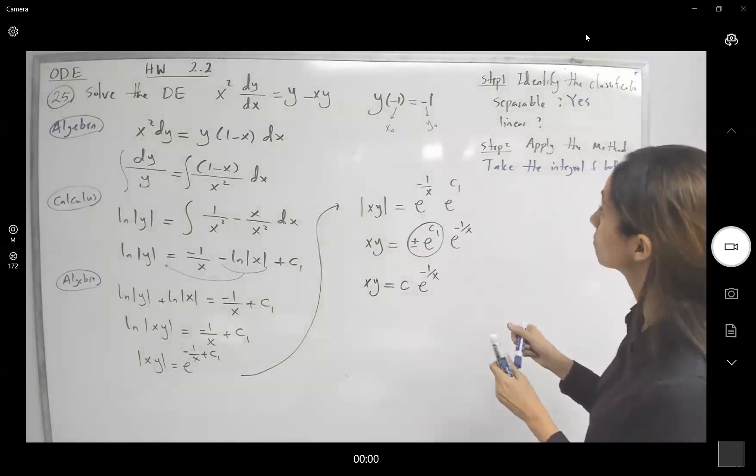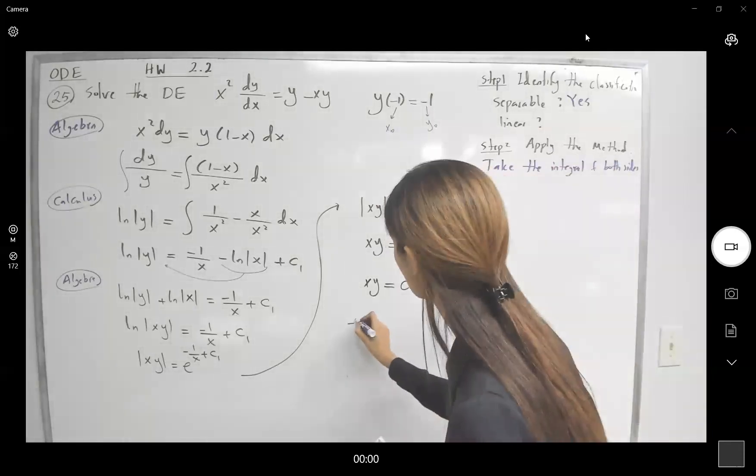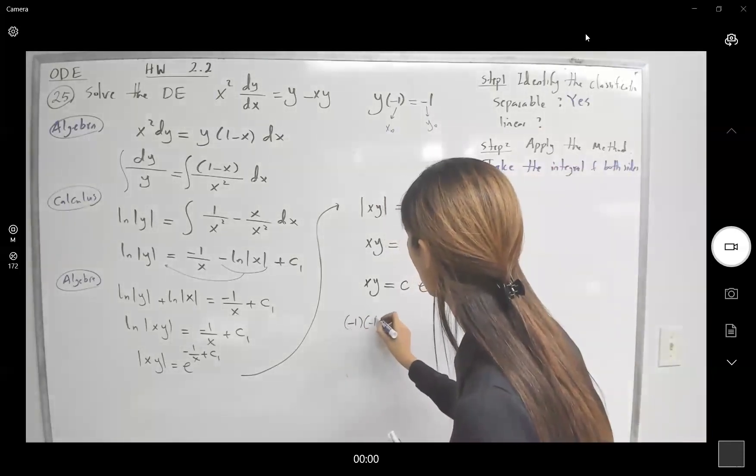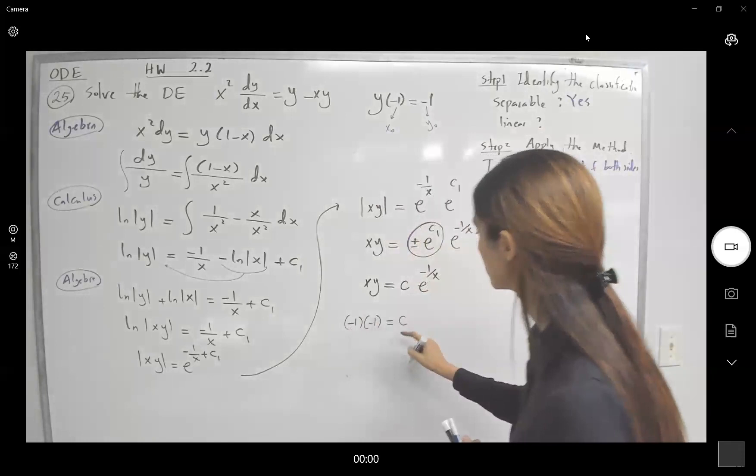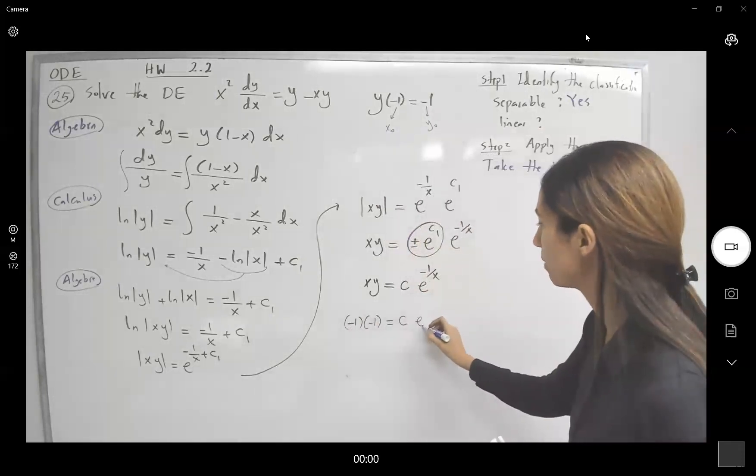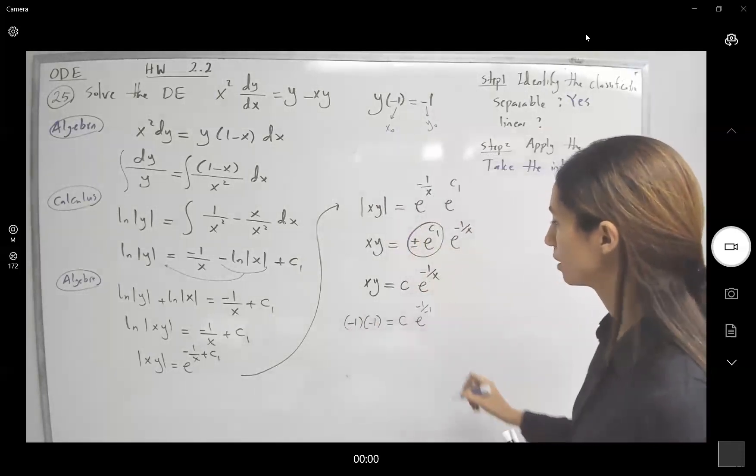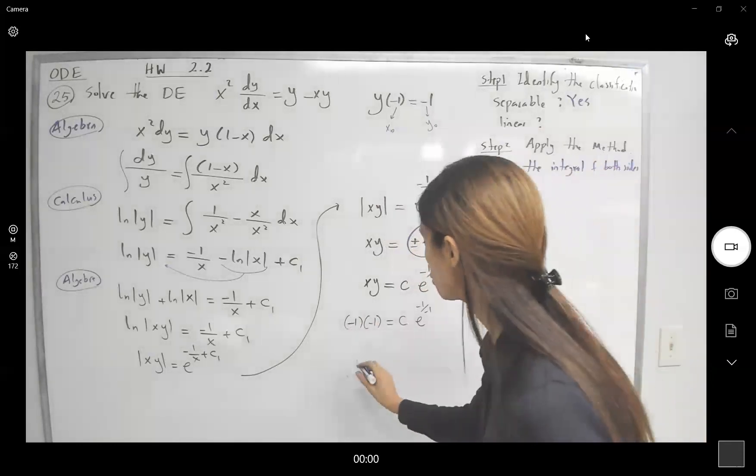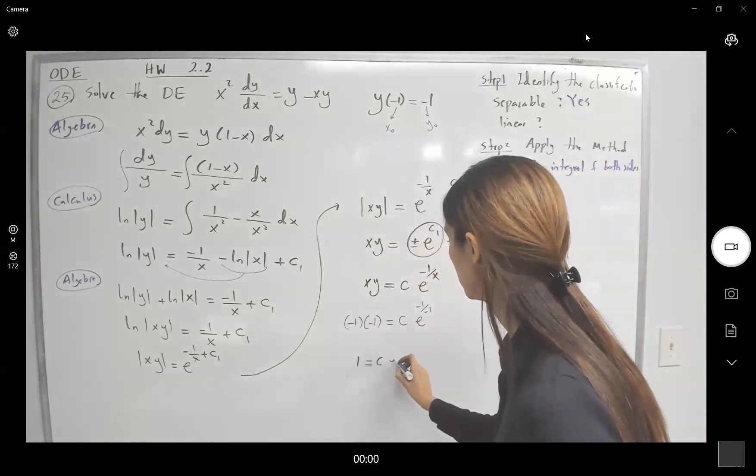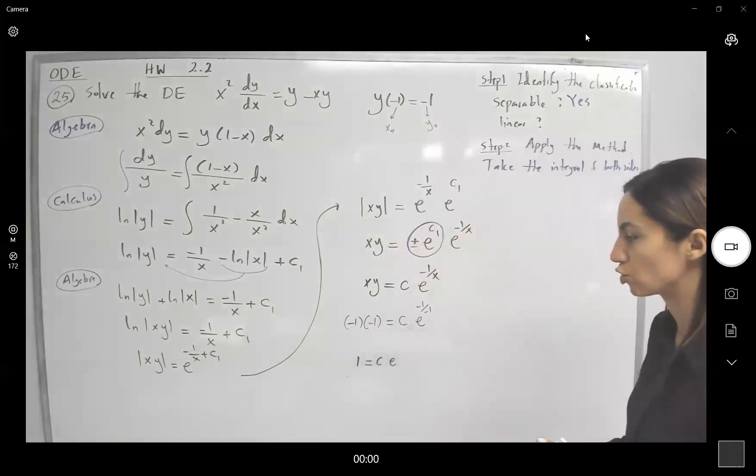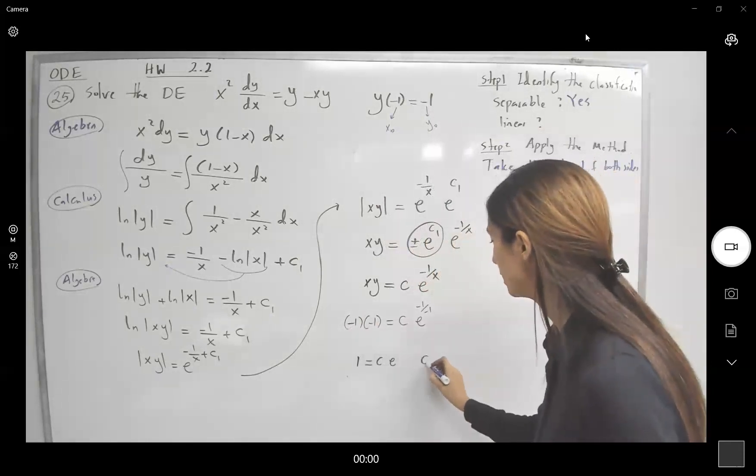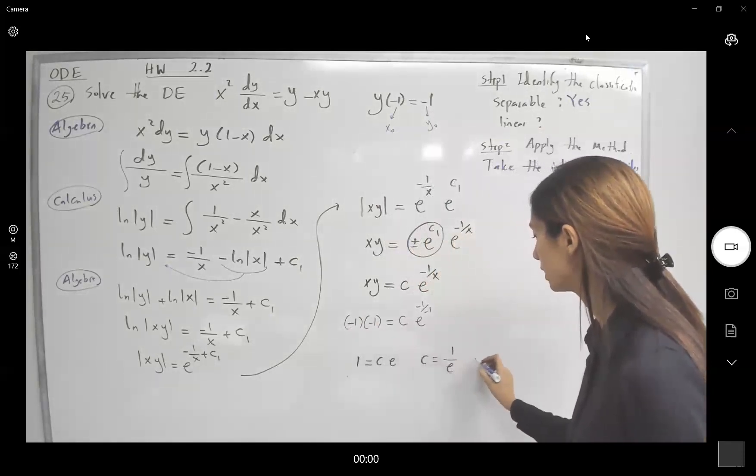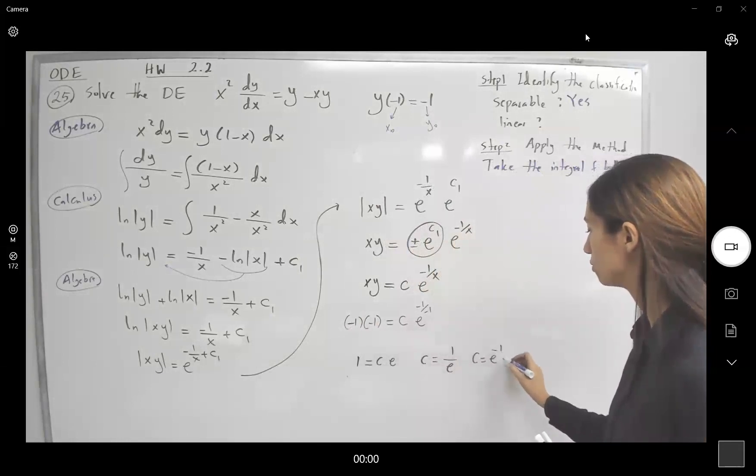So on the left hand side, you have negative 1 times negative 1. And on the right hand side, you have c times e to the power negative 1 over negative 1. So 1 is equal to c times e to the power 1, or ce. So c is equal to 1 over e, or c is e to the negative 1.